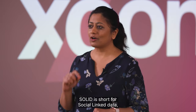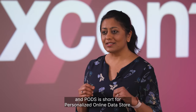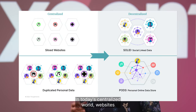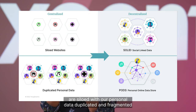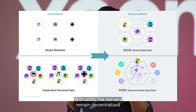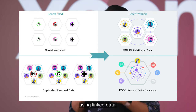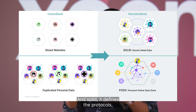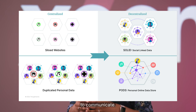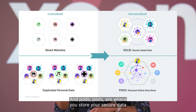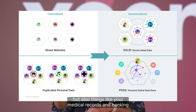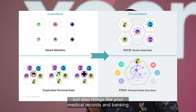Solid is short for Social Linked Data, and Pods is short for Personalized Online Data Store. In today's centralized world, websites are siloed with our personal data duplicated and fragmented throughout. With Solid, the servers remain decentralized using linked data. Solid defines the protocols — the glue — that allow decentralized servers to communicate. And Pods are where you store your secure data, like personal photos and social media posts, but also medical records and banking information.